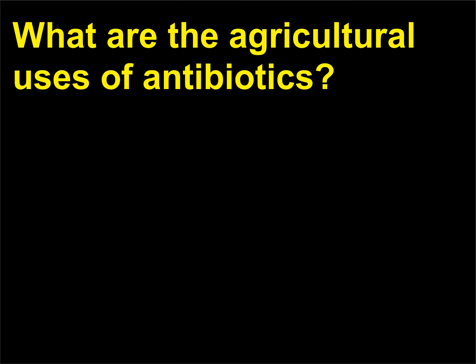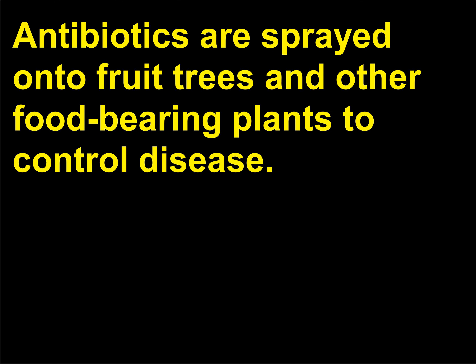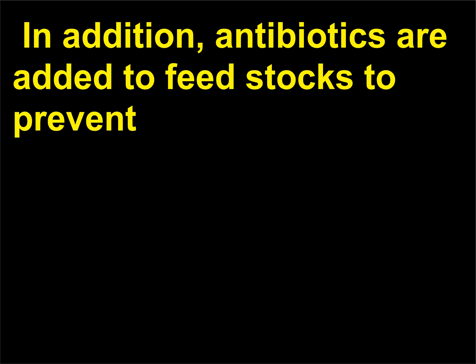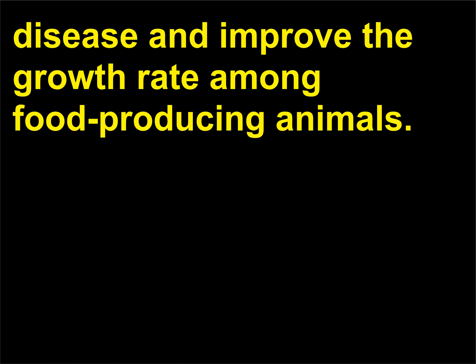What are the agricultural uses of antibiotics? Antibiotics are sprayed onto fruit trees and other food-bearing plants to control disease. In addition, antibiotics are added to feedstocks to prevent disease and improve the growth rate among food-producing animals.